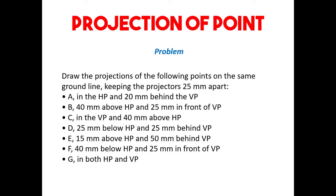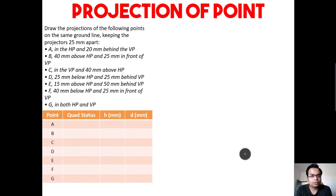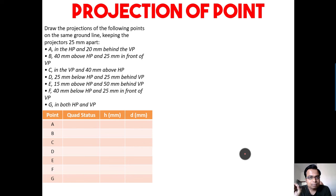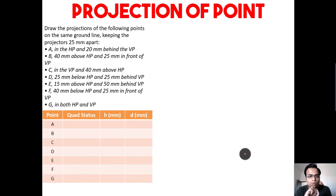Let's begin. In this video we'll make orthographic projections for seven different points — A through G. To do that, we first need to know which quadrant the point lies in — first, second, third, or fourth — and at what distance it is from the vertical plane (VP) and horizontal plane (HP). Distance from HP is represented by small h, distance from VP by small d.